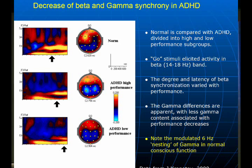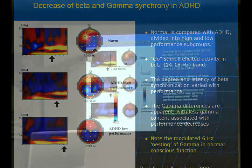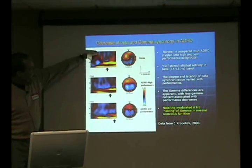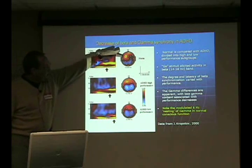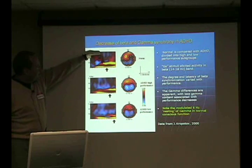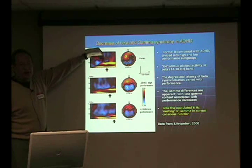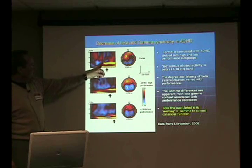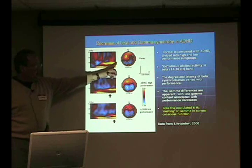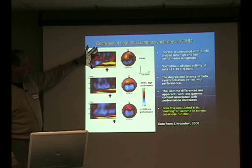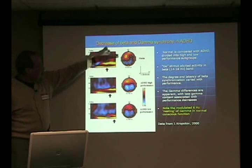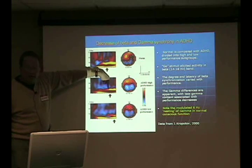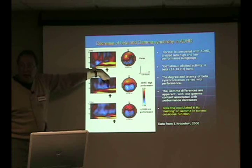Looking at something we saw yesterday: beta synchronization in a normal person occurs at about 500 milliseconds — that's conscious awareness, when you become consciously aware of a stimulus and respond to it. In high-functioning ADD, beta synchronizes but it's slower; it took them longer to become conscious.